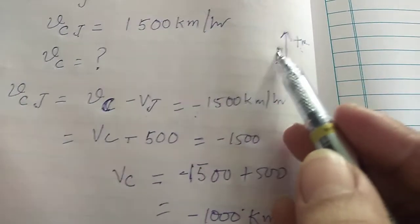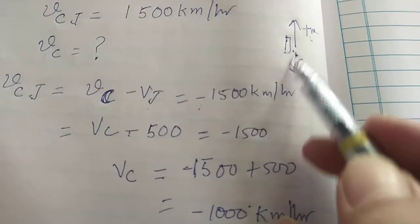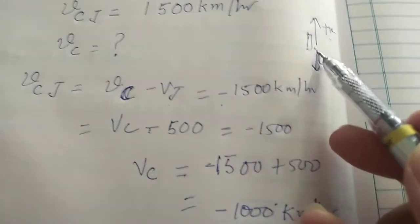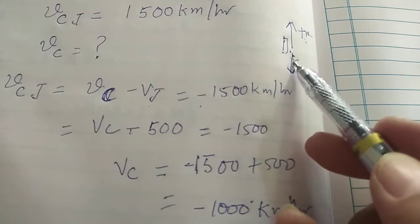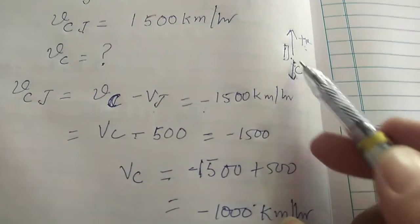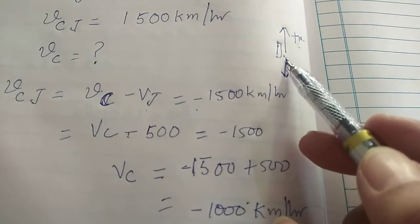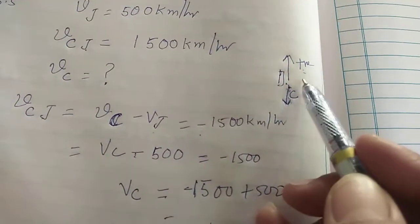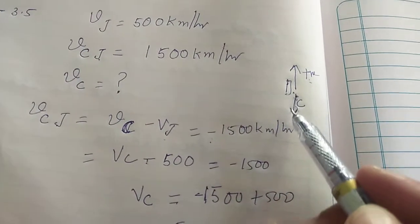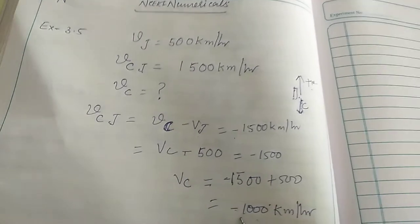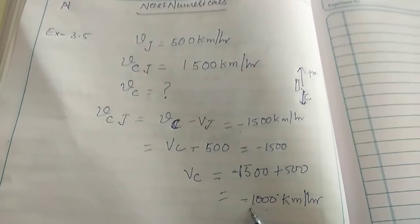So as observed from the ground, ignoring the jet plane's motion, these combustion products are coming out with a velocity of 1000 km per hour in the downward direction. The minus sign confirms they are moving downward, since we considered upward as positive. This is the result and the application part of relative velocity for example 3.5.